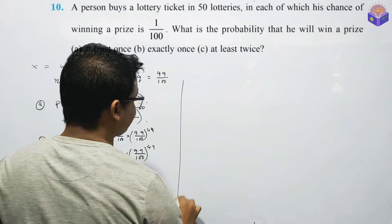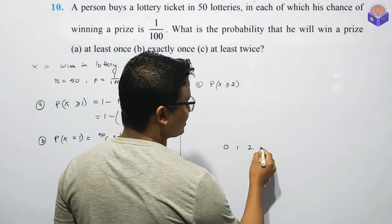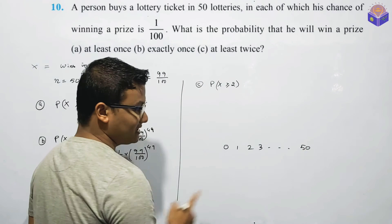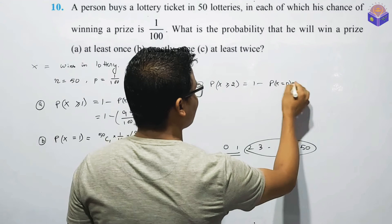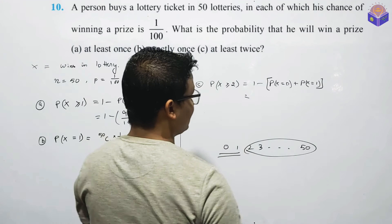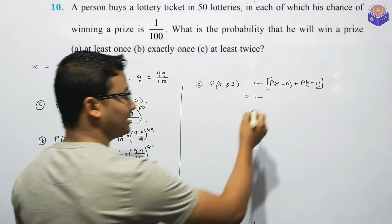Next, we have to find P of X greater than equal to 2 — at least twice. So this is the power of 2. At least 2, which means 2 is 0 to 1. This is 1 minus P of X equal to 0 plus P of X equal to 1. 1 minus P of X equal to 0 is 99 upon 100 to the power of 50.